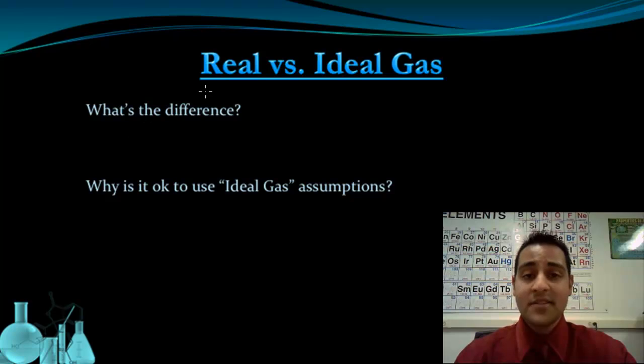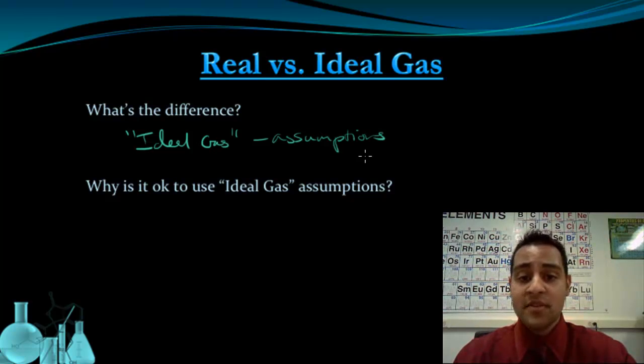So first of all, what's the difference between a real gas and an ideal gas? Everything we've talked about so far about gas laws and the kinetic molecular theory has been based on certain assumptions. But the assumptions that kinetic molecular theory makes, and that some of these gas laws are based off of, we know those assumptions aren't true. But we use them anyway, and we call it an ideal gas. So an ideal gas is based off assumptions. And it's important to point this out, that the assumptions we know are not true.